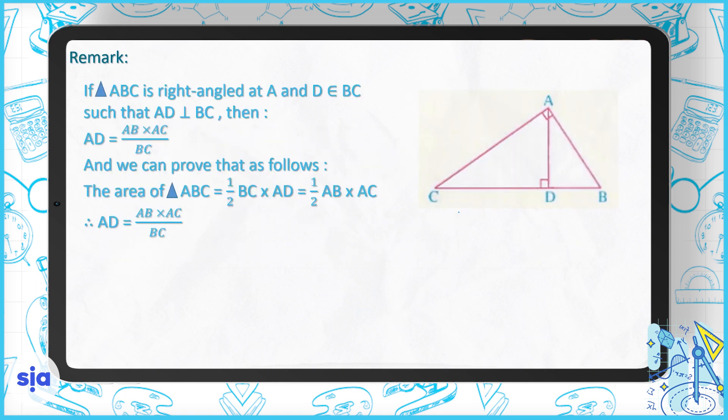This remark says: if triangle ABC is a right triangle at angle A, and D belongs to BC such that AD is perpendicular to BC, then AD = (AB × AC) / BC.